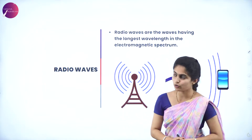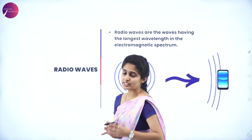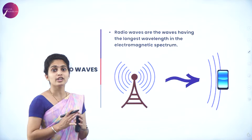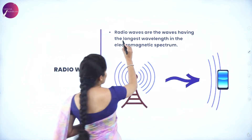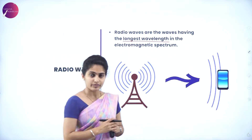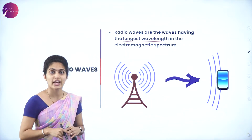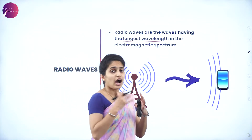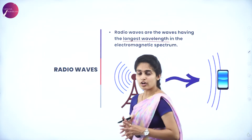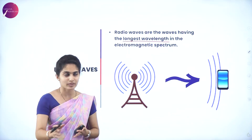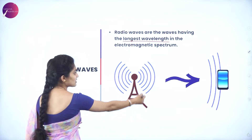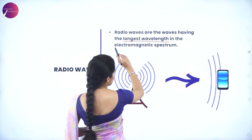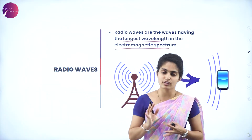Radio waves have frequency less than 3×10⁹ Hz. These waves are very helpful for communication. Radio waves have the longest wavelength and shortest frequency in the electromagnetic spectrum. Because of their long wavelength, they can travel miles together, which is why radio stations use them. Radio waves are the very first waves mentioned in the electromagnetic spectrum.